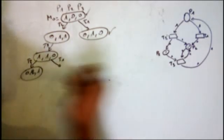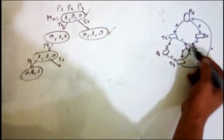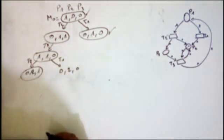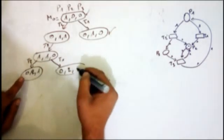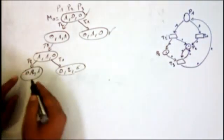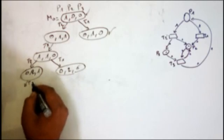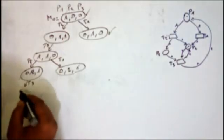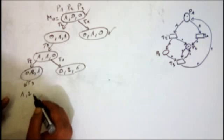If I fire T1 from the marking (1, 1, 0), I remove the token and add 2 tokens in P2, so I get (0, 2, 0). There is no fireable transition from this marking. From the marking (0, 2, 1), I fire T3 — I remove one from P2 and one from P3, and add one in P1 and one in P2 — and I get (1, 2, 0).